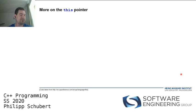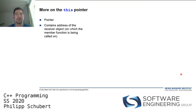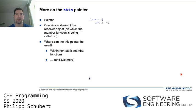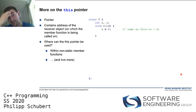Let's cover some additional uses of the 'this' pointer. The 'this' pointer contains the address of the receiver object — the object on which a member function is being called. It can be used in any non-static member functions. For example, you can have a class T with integer data members x and y.